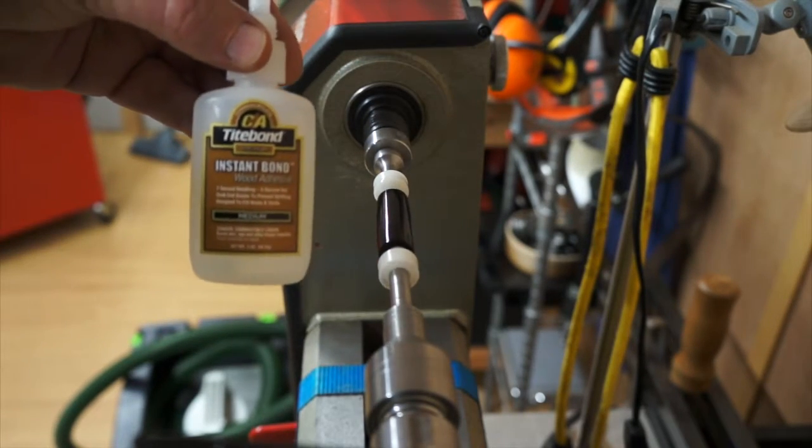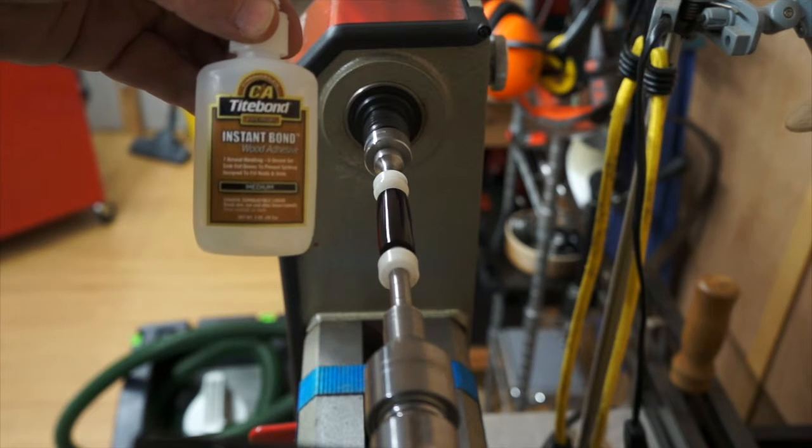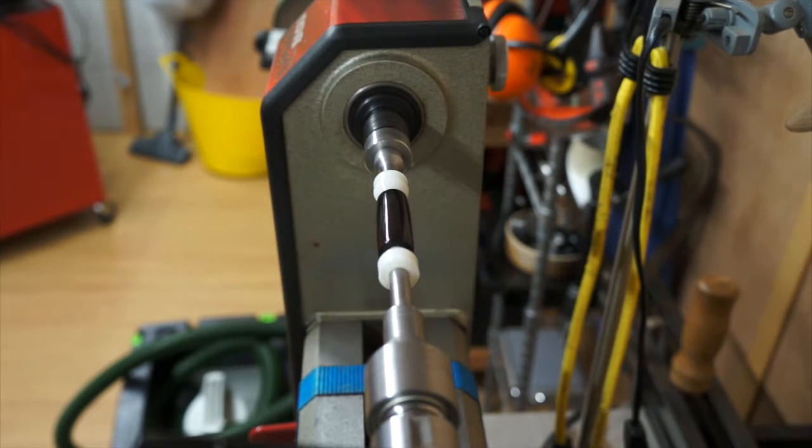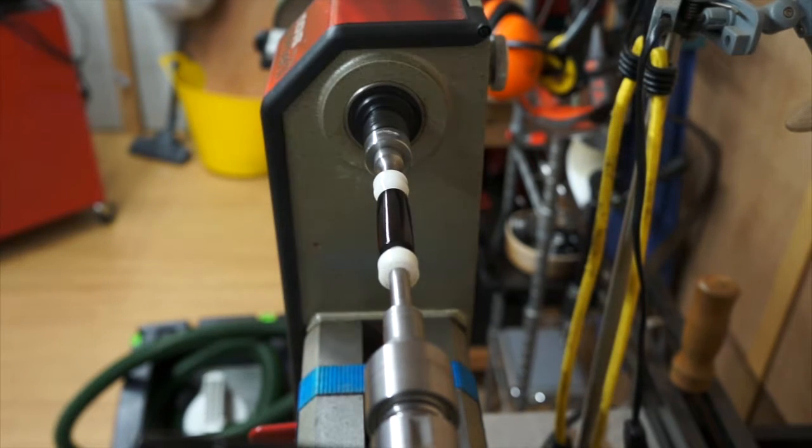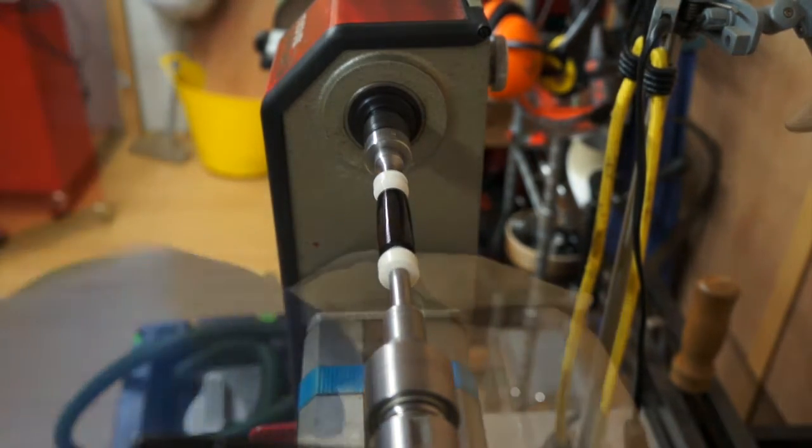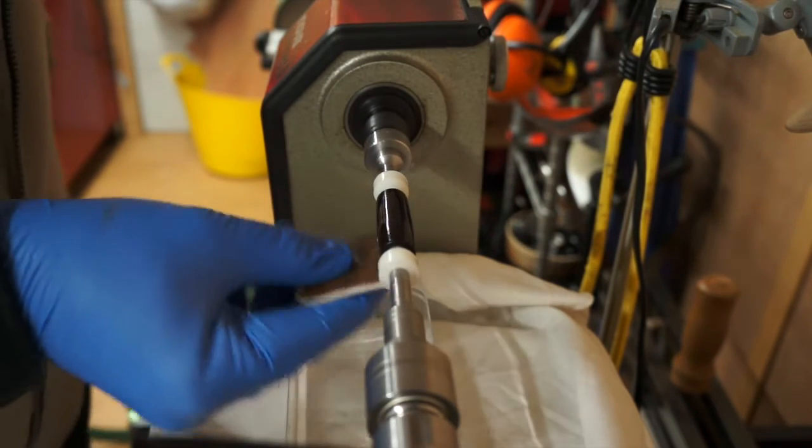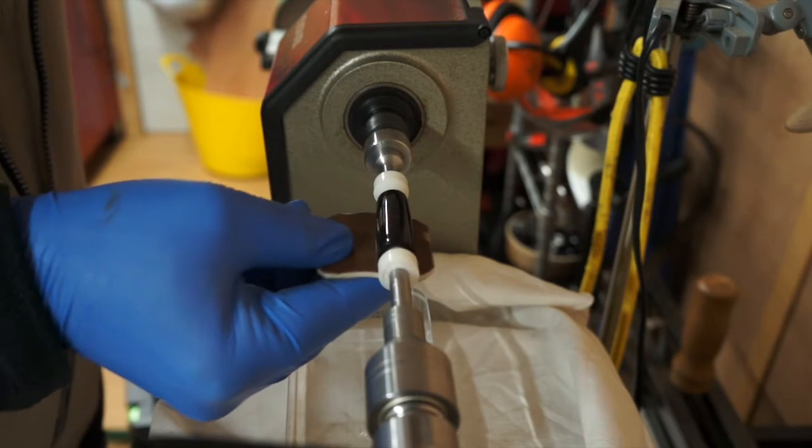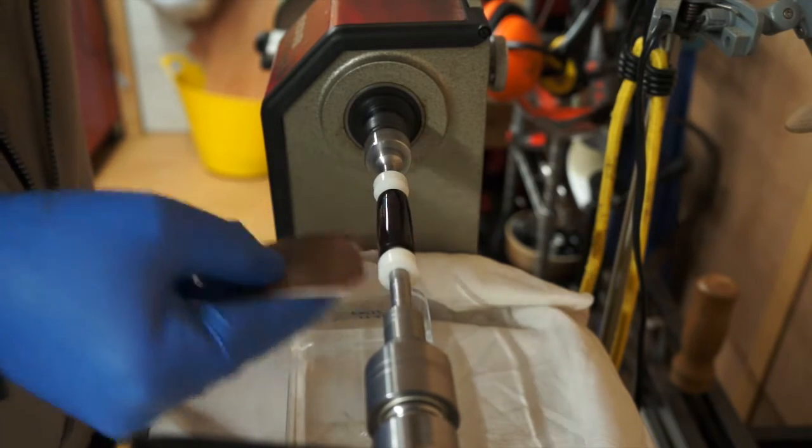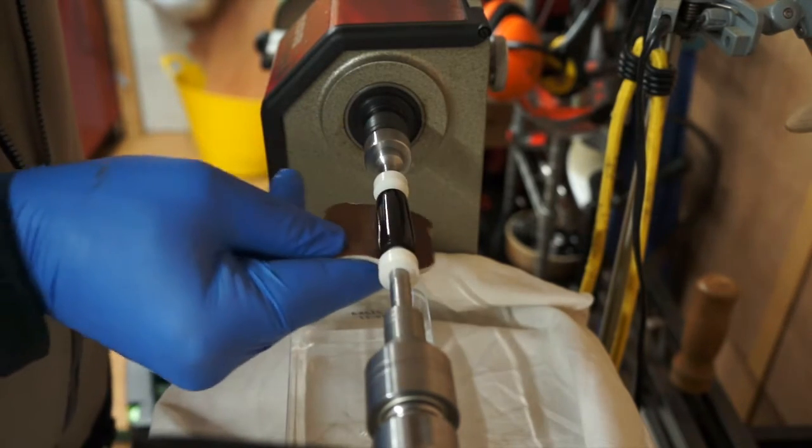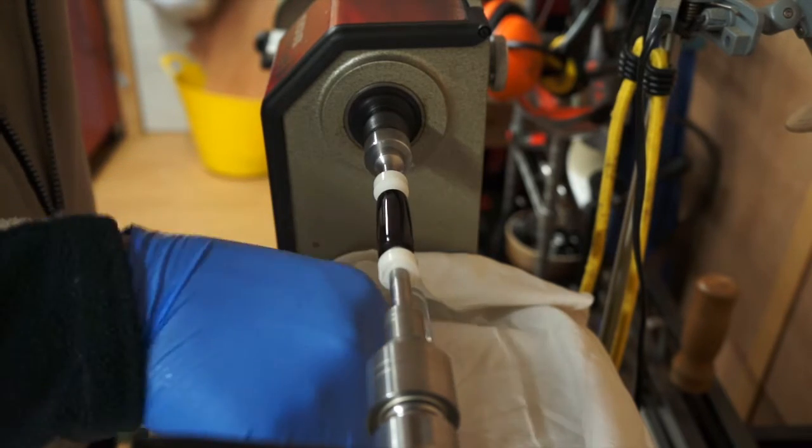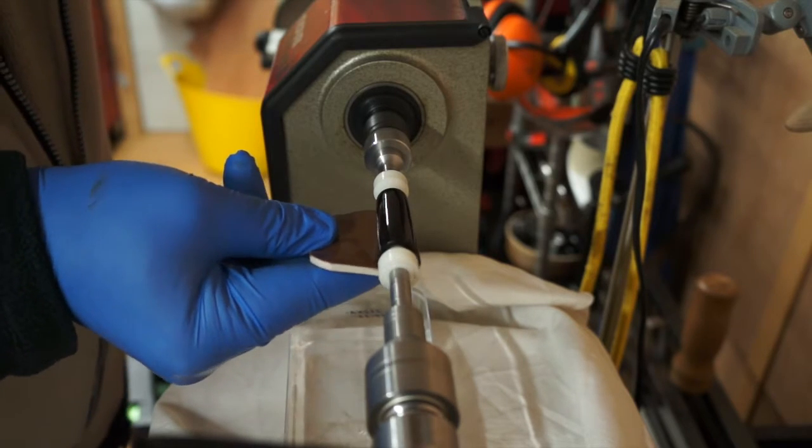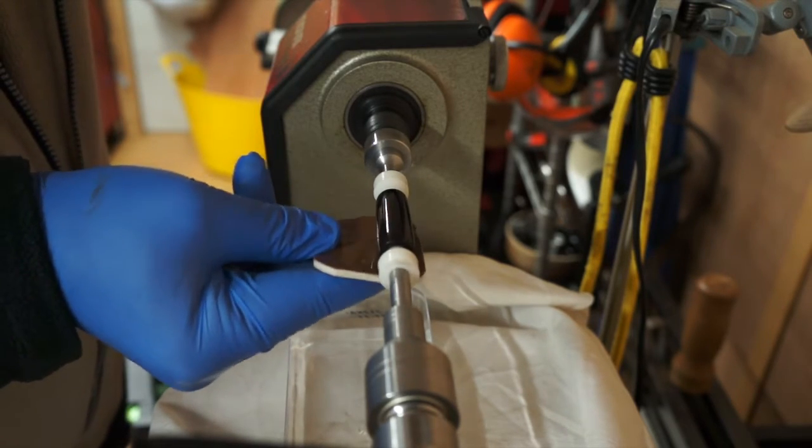I'm trying Titebond - this is CA Titebond Instant Bond Wood Adhesive CA Medium. I've got to get some thin and some thick as well. Just starting the micro mesh - this is the 1500 grit, the coarsest of them all, the brown one. I'm just going to go through the whole micro mesh sequence and hopefully bring this to a beautiful conclusion.